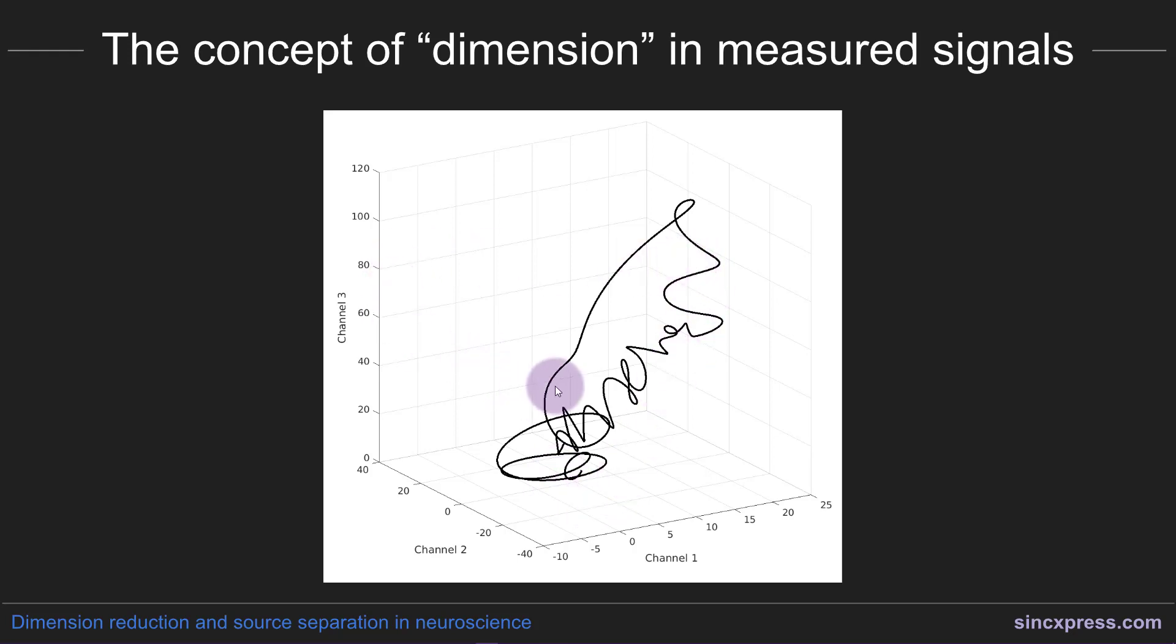It's also interesting to have a look at the data like this. You can see that features you would sometimes see when you're looking at the time series from only one channel is actually just the projection of this trajectory onto that dimension. So if you look at this wiggly line, this looks kind of funny, but if you were looking only at channel one's activity and ignoring channel two and channel three,